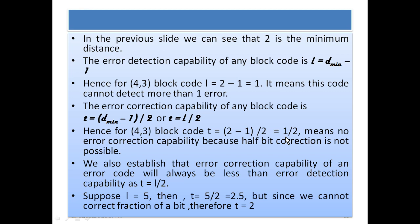Error correction capability is always less than error detection capability, since T = L / 2. For example, if L = 5, then T = 5/2 = 2.5. Since we cannot correct a fraction of a bit, T = 2. We cannot round up to 3 because the code cannot correct more than 2.5 bits, and 0.5-bit correction is also not possible, so the maximum correction is 2 bits.